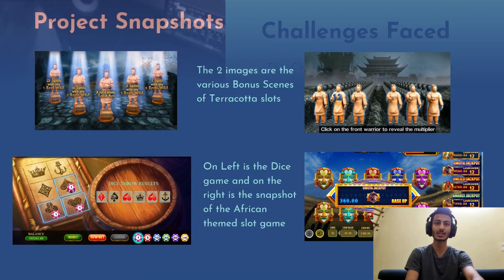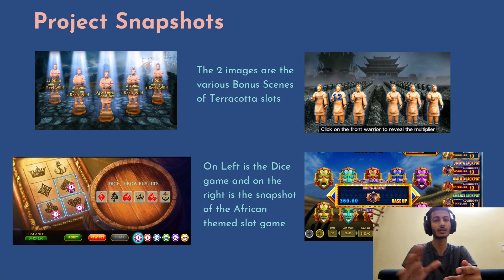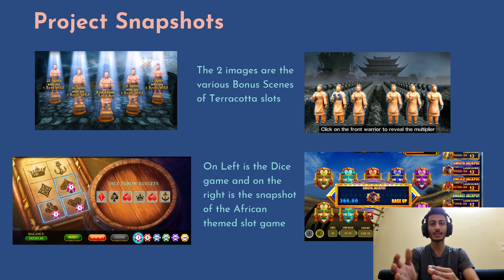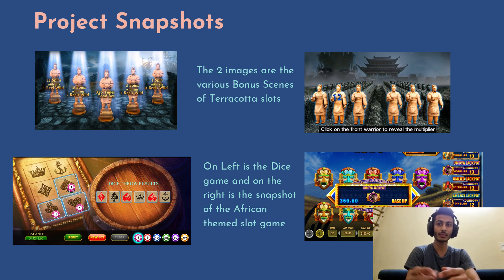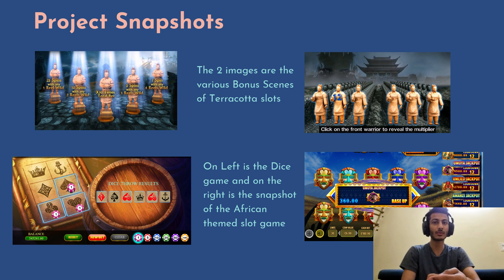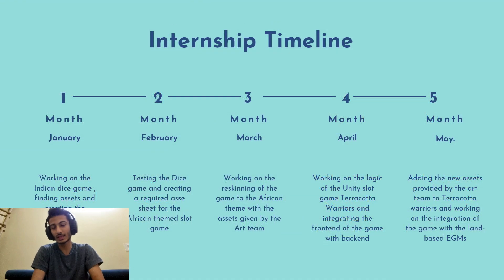The project snapshots are as follows. The first two snapshots are of the Terracotta Warriors game, showing the older assets and bonus themes of the slot game. The bottom-left image is the dice game I created using mock assets, and the bottom-right is the bonus game of the African-themed slot game which I created.